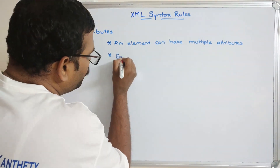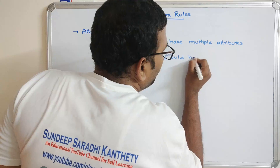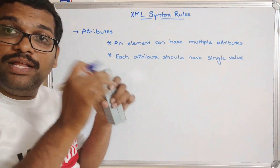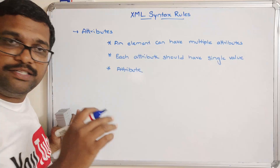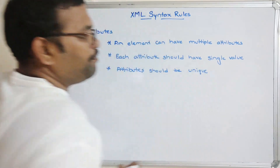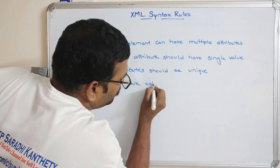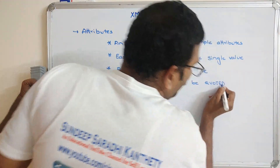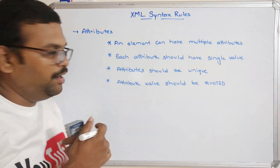Each attribute should have only a single value. Attributes should be unique — there should be no duplications. Attribute values should be quoted, meaning we have to enclose them in double quotation marks. Whatever attribute value we are writing should be double-quoted.